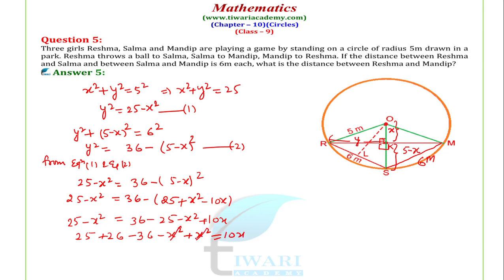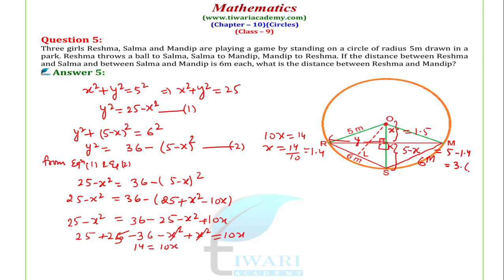X² और X² cancel हो जाते हैं। 25 + 25 − 36 = 14, तो 10X = 14, means X = 14/10 = 1.4. इस figure में X = 1.4 और 5 − X = 5 − 1.4 = 3.6.